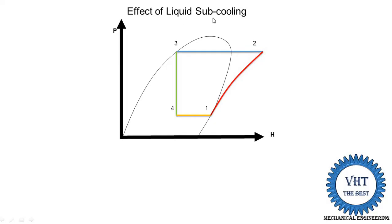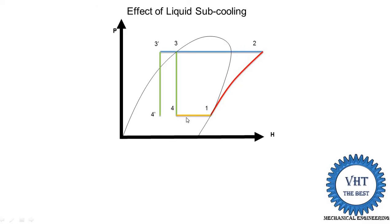The first factor is the effect of liquid subcooling. Subcooling means reducing the temperature of the liquid refrigerant coming out from the condenser at point 3, the outlet of the condenser. After point 3, we further reduce the temperature of the liquid refrigerant using a subcooler or by increasing the water flow rate into the condenser. When we reduce this temperature, the heat rejection line is extended further, giving us point 3-dash, followed by the expansion process at point 4-dash, and the refrigerating effect line is increased from 4-dash to 1.